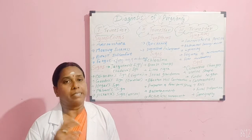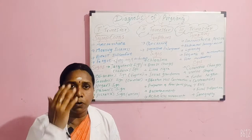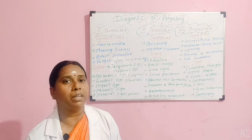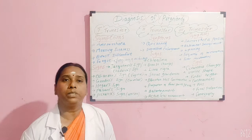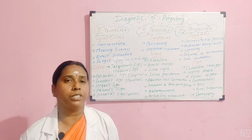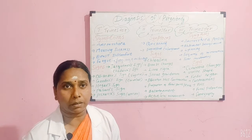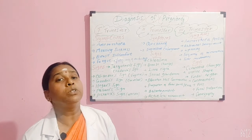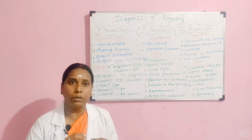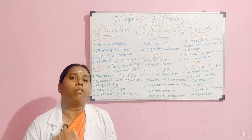The signs of the second trimester include Chloasma — the butterfly marks over the forehead and cheeks of the mother due to hormonal changes, which resolve after delivery. Then come breast changes: the primary areola darkens, the secondary areola forms, and the Montgomery's tubercles become visible. Montgomery's tubercles are small sebaceous glands around the nipples used to lubricate the areola, which helps prevent cracking of the nipples during feeding.